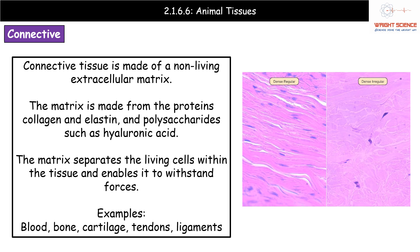The second type of tissue is connective tissue. It's made up of a non-living extracellular matrix made from proteins such as collagen and elastin, and polysaccharides like hyaluronic acid. The purpose of this matrix is to separate the living cells within the tissue and enable it to withstand various forces. We find connective tissue in bone, cartilage, tendons and ligaments — all regions exposed to forces due to movement that push and pull on those areas.